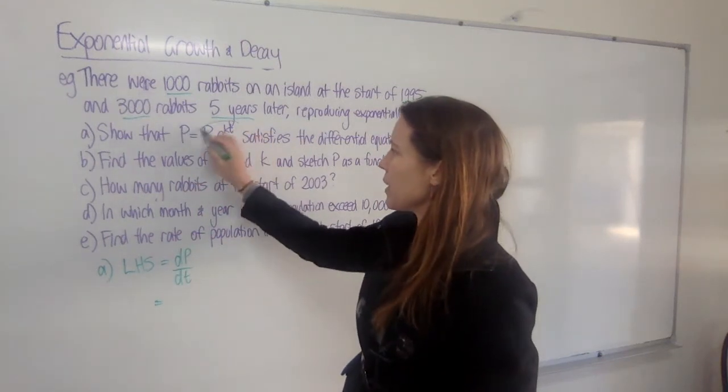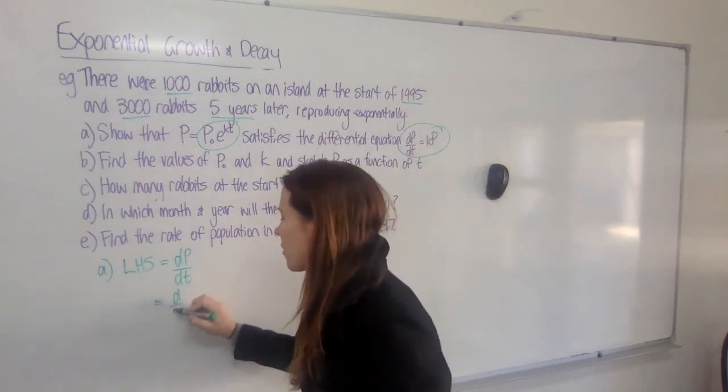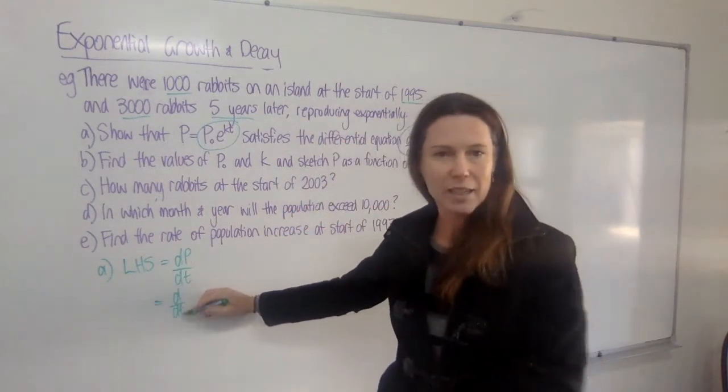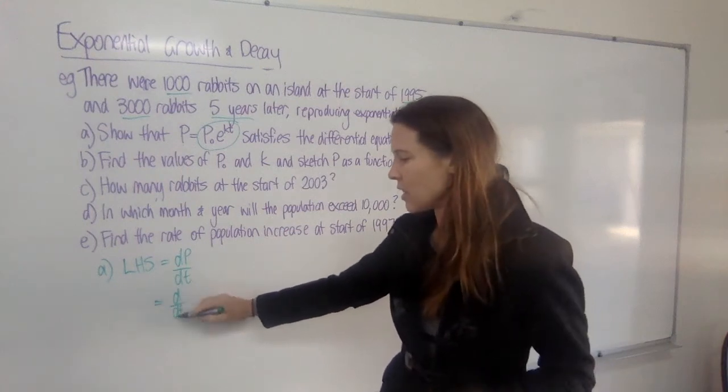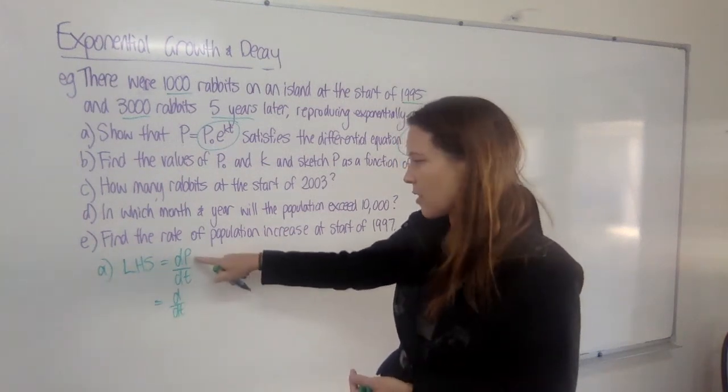We've been told what P is. It's equal to all of this. So I'm going to sub it in where the P is. Now, remember that we can write that we're going to d/dt something. We're really differentiating with respect to time.